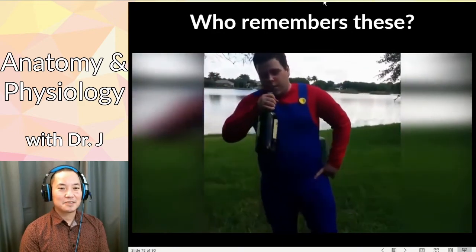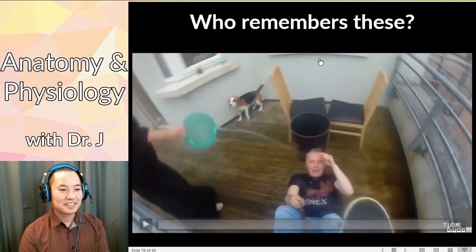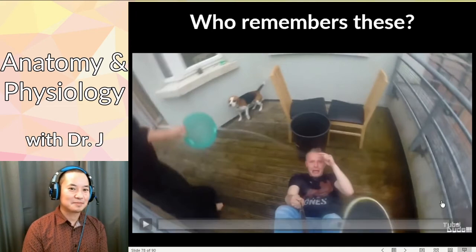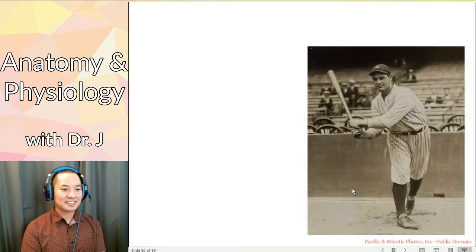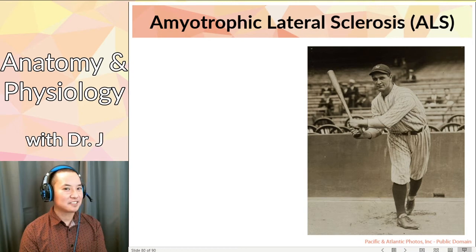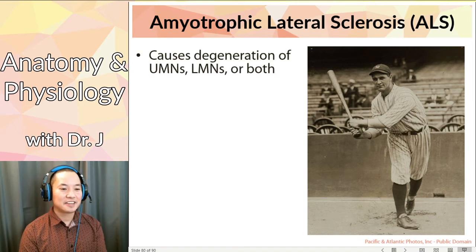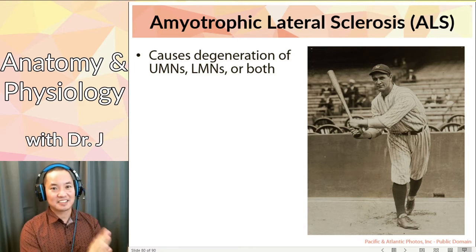In the chat, what are all these involving? So remember the ice bucket challenge - it was supposed to be for ALS, but what is ALS? ALS is also called amyotrophic lateral sclerosis - that's what ALS stands for. It's also called Lou Gehrig's disease. This was Lou Gehrig. He was a baseball player, and this is why they called it that, because he experienced this disease.